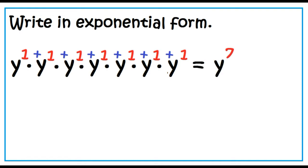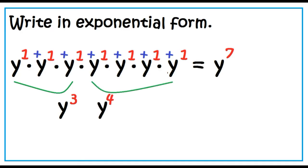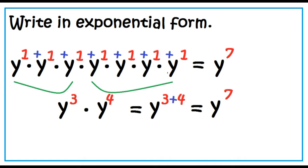If you multiply 3 y's, y times y times y is equal to y cubed. y times y times y times y is equal to y to the power of 4. Multiplying y cubed and y to the power of 4 will give you y to the power of 3 plus 4, which is equal to y to the power of 7. Yes, to multiply monomials with the same base, add the exponents.